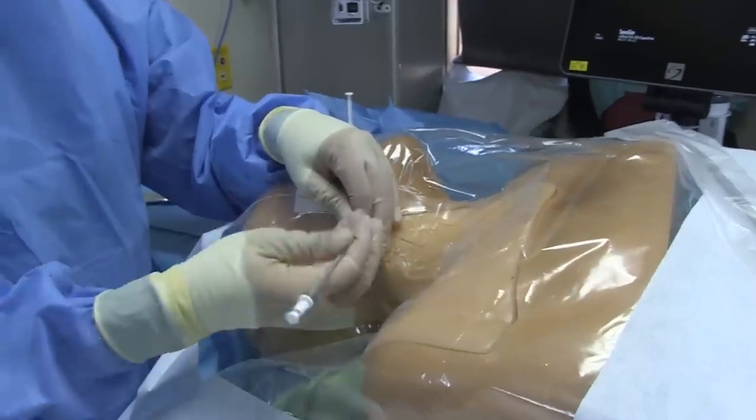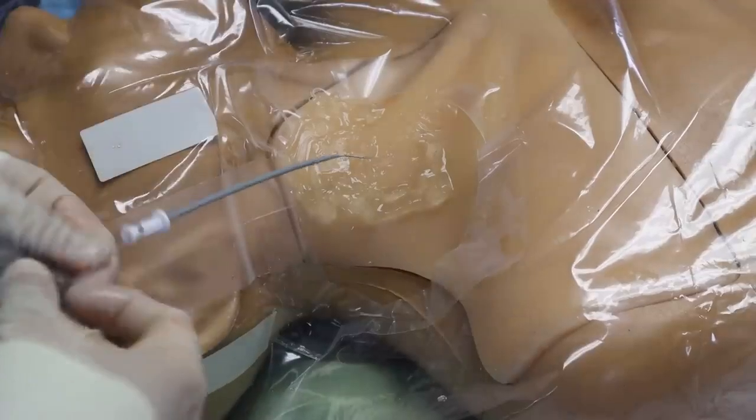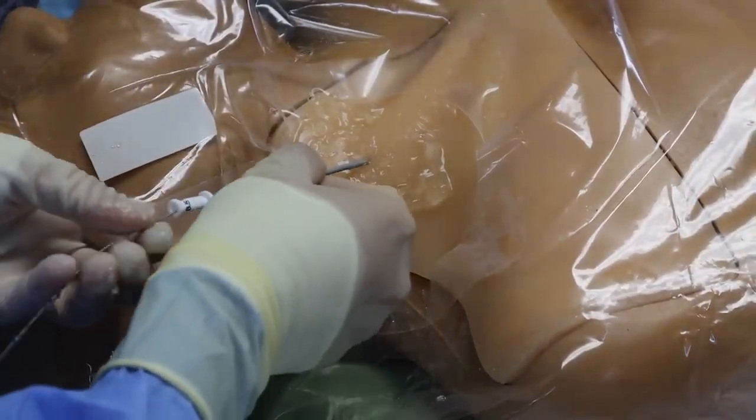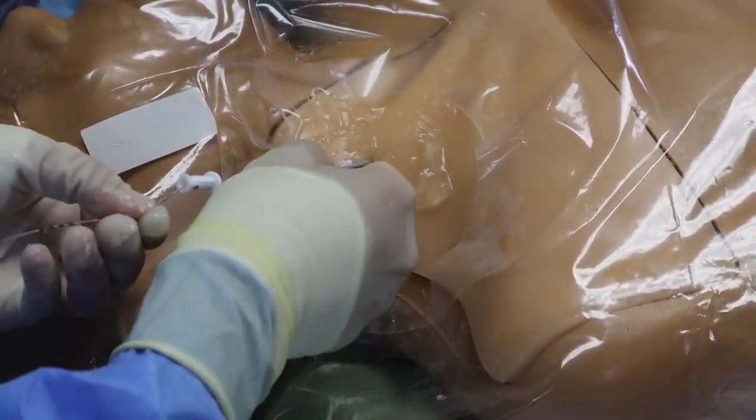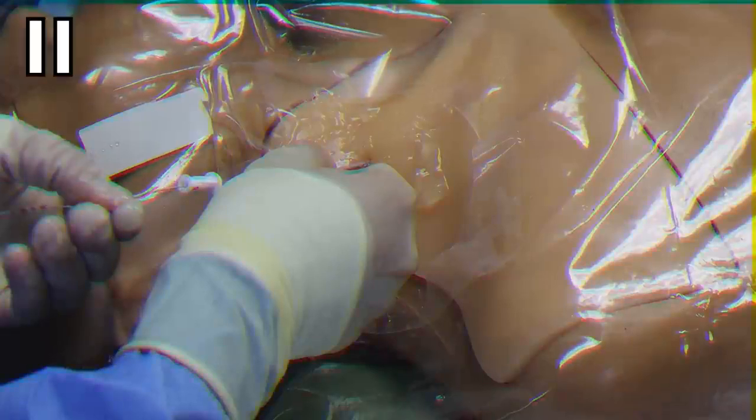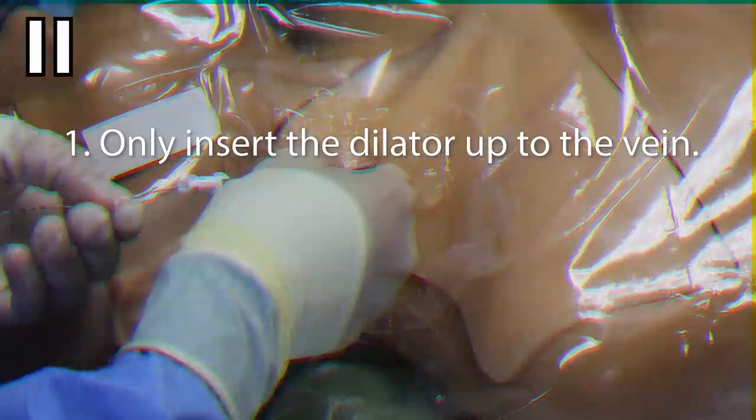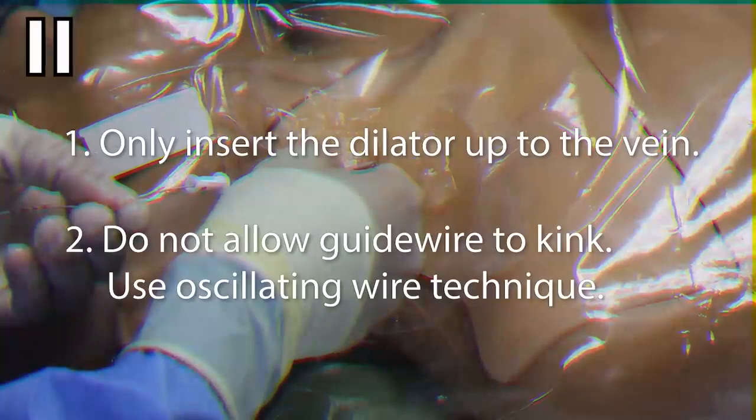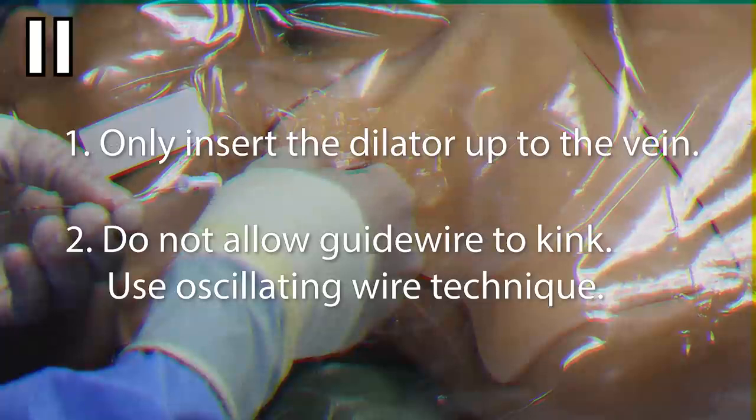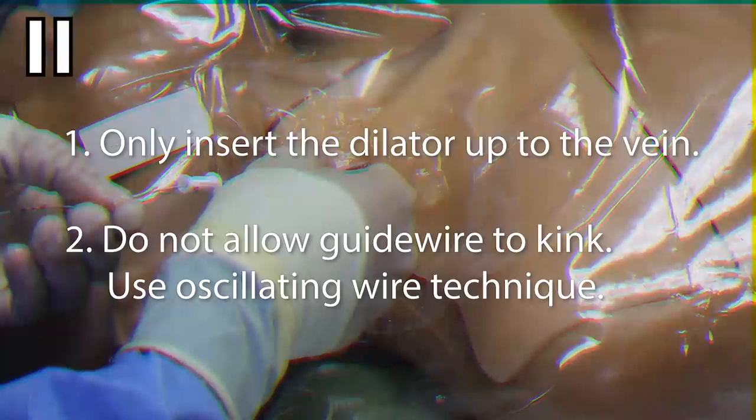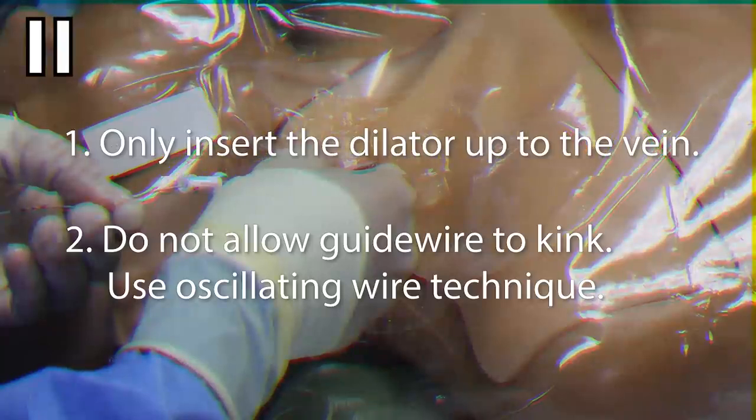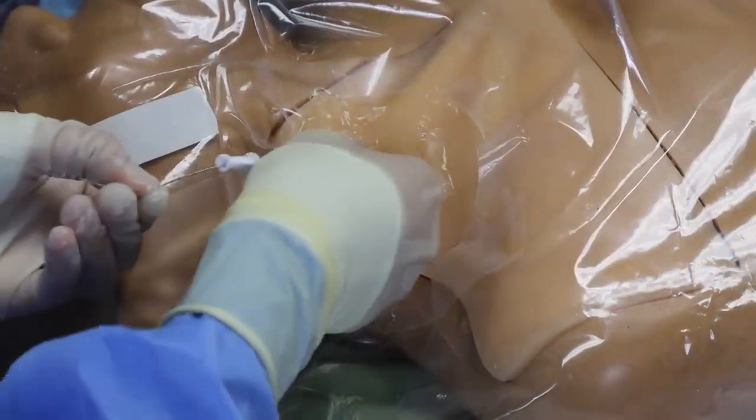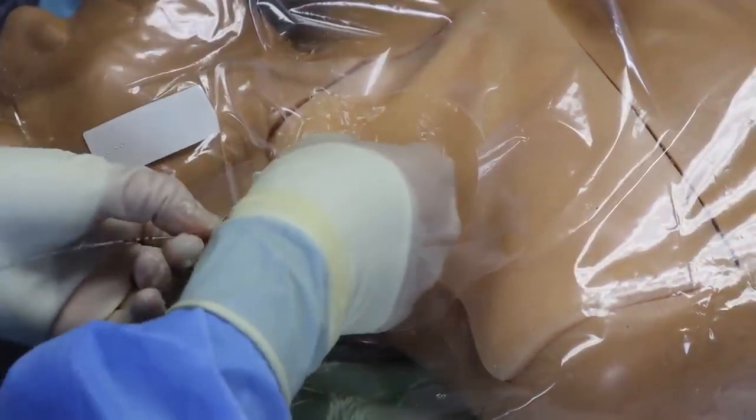Now grab that dilator and feed it over the wire to get it to the skin. Applying firm but steady pressure and with a bit of a twisting motion, dilate the skin and the subcutaneous track. A couple notes about dilation. One, you only need to insert the dilator up to the anticipated depth of the jugular vein which is usually no more than 3-4 cm. And two, you need to prevent kinking of the guide wire as it emerges from the tip of the dilator, which can happen when you try to force the dilator over the wire. A kinked wire can tear the vein. To prevent this, I gently oscillate the wire back and forth to ensure it continues to glide smoothly as I advance the dilator.